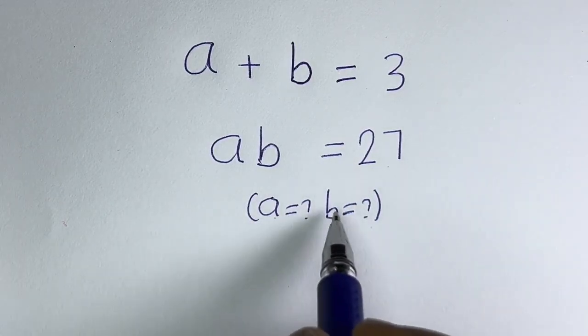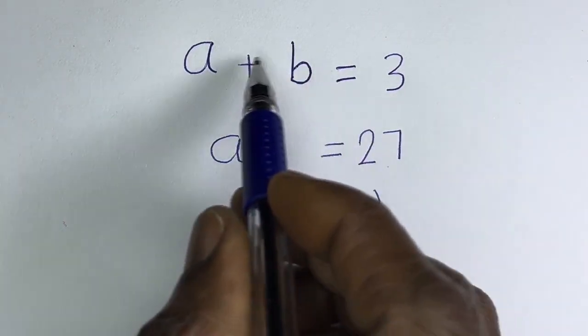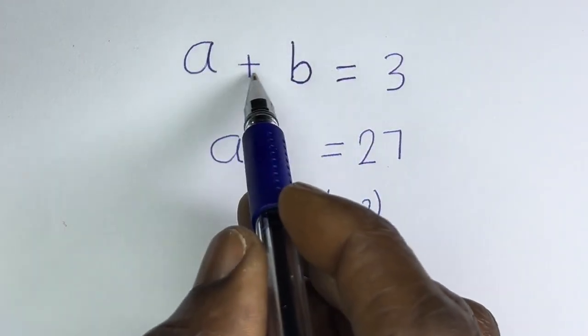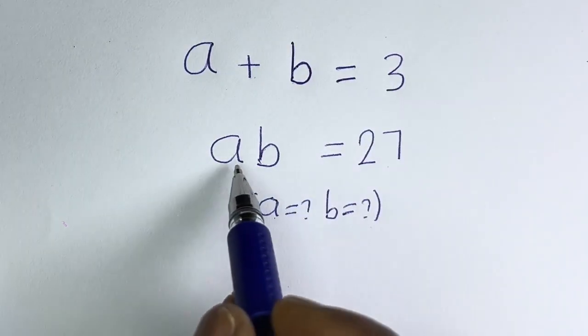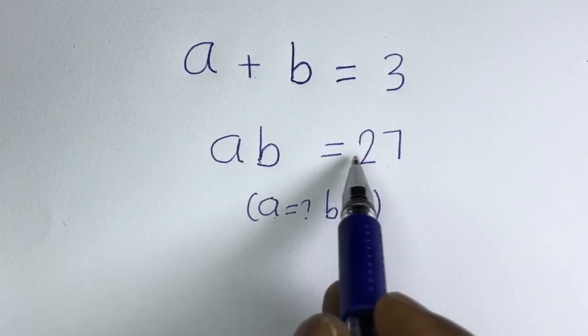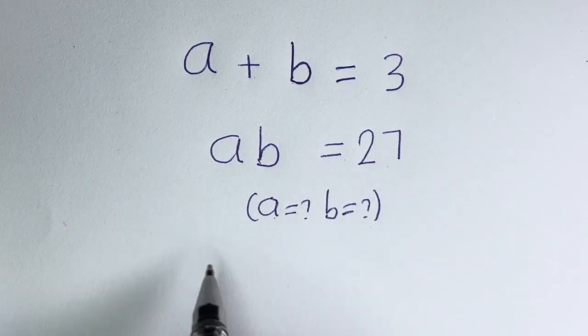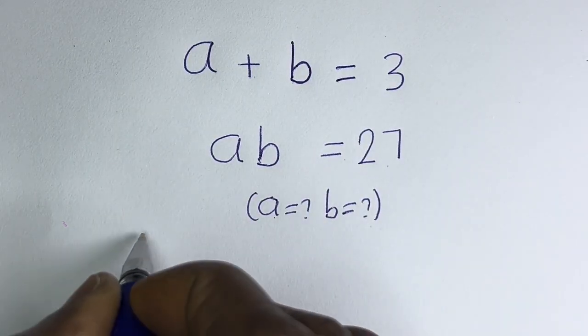Hello. How to solve for a and b in this equation: a plus b is equal to 3, and a times b is equal to 27. Solution.